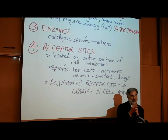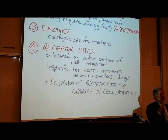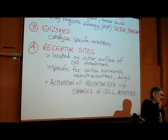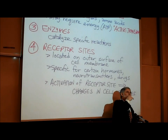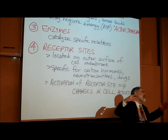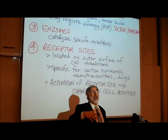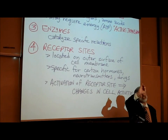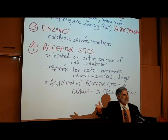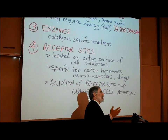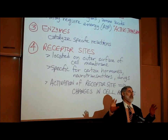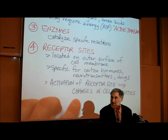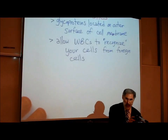This also answers the question of how a drug 'knows' to go to the right organ. When you swallow a drug it's absorbed into the bloodstream and carried everywhere in the body, but it can only affect those cells that have a receptor site for that drug. If a drug is designed to attach to a receptor site on heart cells, it will only affect heart cells. Estrogen is carried everywhere in the bloodstream but will only affect cells that have estrogen receptor sites.